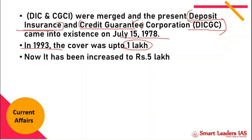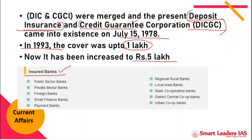Regarding which banks are insured under DICGC: when the DIC was formed in 1961, only commercial banks were covered. Now, many types of banks are included — small finance banks, payment banks, RRBs, local area banks, and all cooperative banks except agriculture societies. Agriculture societies are not even considered banks, so they are outside the DICGC ambit. Another glaring omission is NBFCs — NBFCs are also not covered under DICGC.